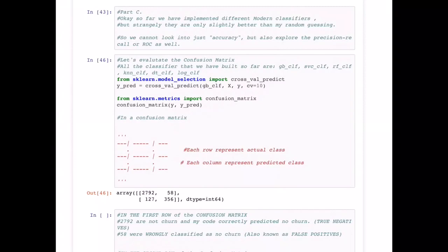In our previous video, we were able to implement many different types of classifiers and checked their accuracy, but strangely they are only slightly better than random guessing. We cannot look into just the accuracy, but also have to explore different other metrics, also known as performance metrics, and we are going to look into the precision, recall, and ROC curve.